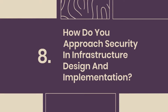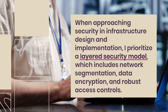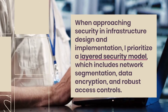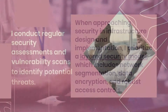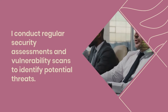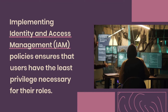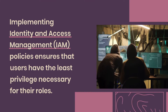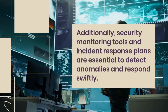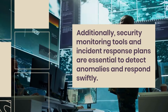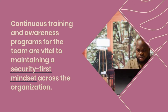Question 8: How do you approach security in infrastructure design and implementation? I prioritize a layered security model, which includes network segmentation, data encryption, and robust access controls. I conduct regular security assessments and vulnerability scans to identify potential threats. Implementing Identity and Access Management policies ensures that users have the least privilege necessary for their roles. Additionally, security monitoring tools and incident response plans are essential to detect anomalies and respond swiftly. Continuous training and awareness programs for the team are vital to maintaining a security-first mindset across the organization.